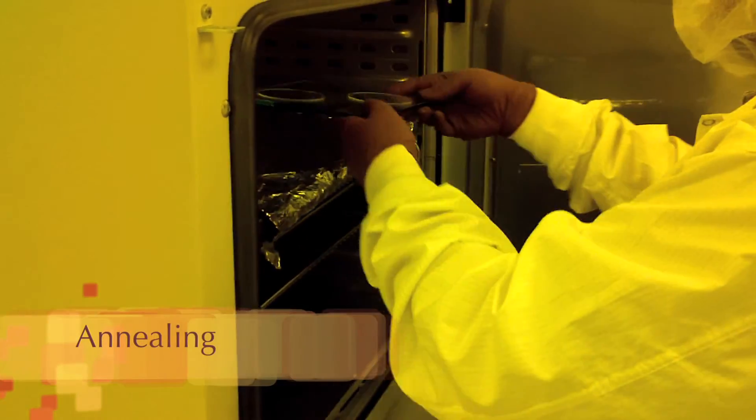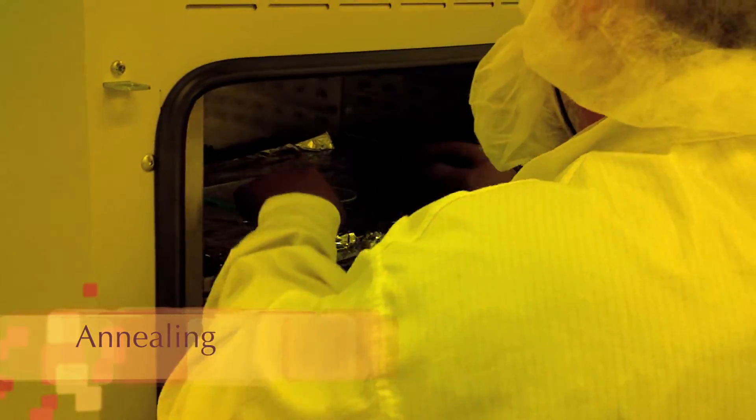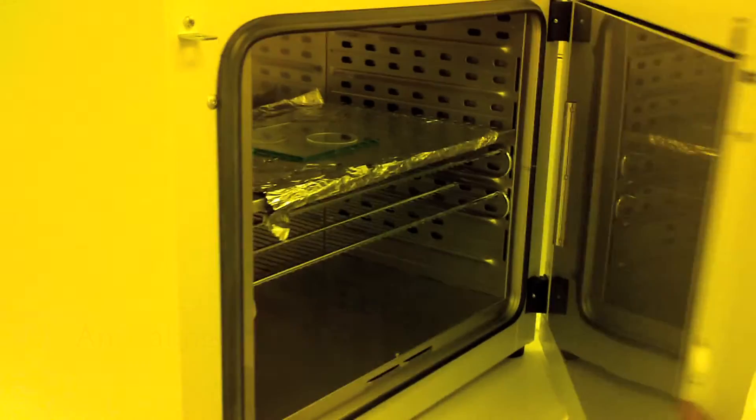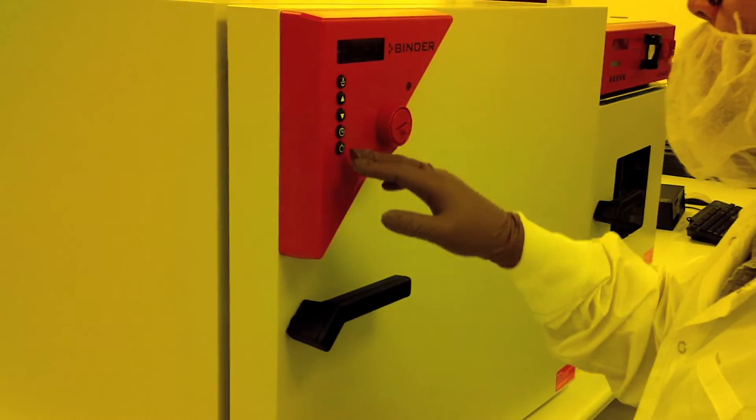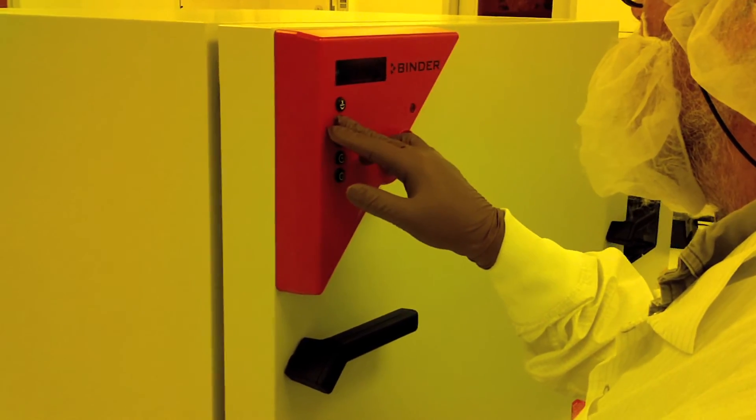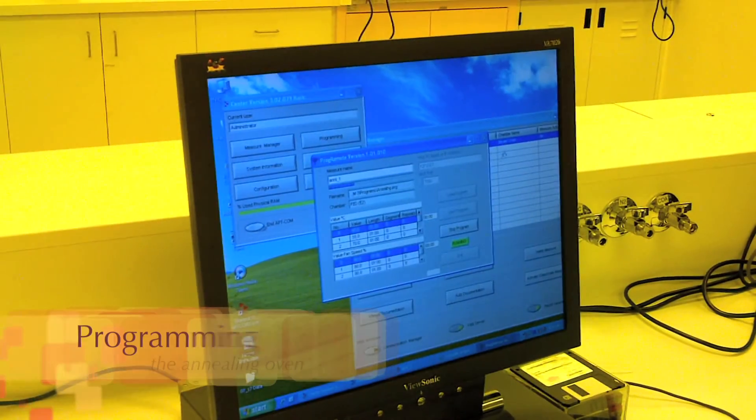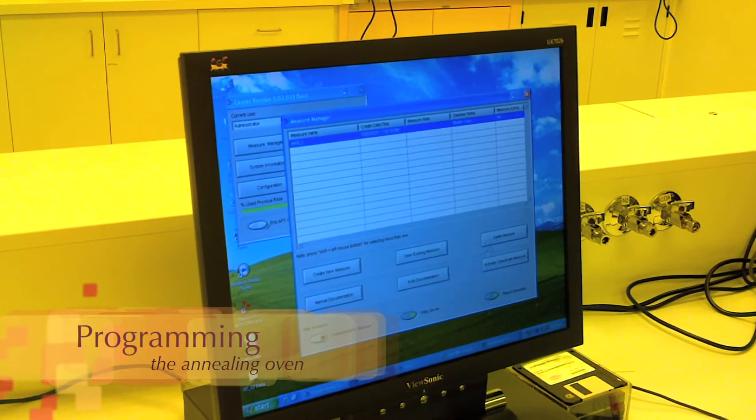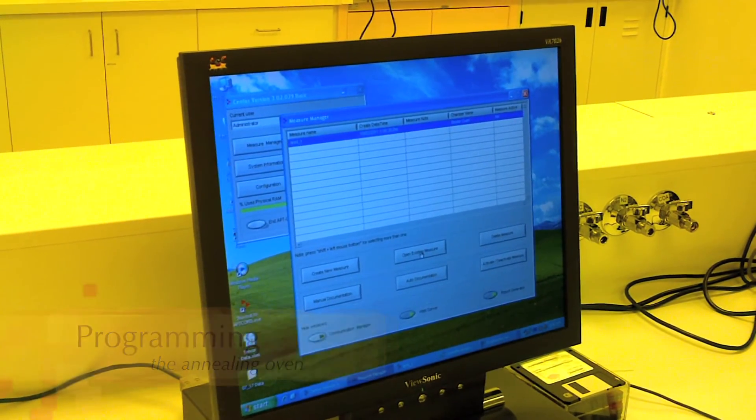The cut PMMA is then annealed in a vacuum oven at 110 degrees Celsius in a programmed sequence to remove any residual stress in the polymer sheet before it is glued onto the substrate. This step is critical as it will avoid future delamination issues from the substrate and prevents cracks forming in the resists.